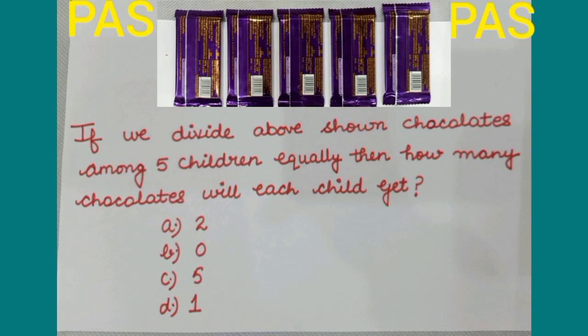Now, the question for pass, if we divide above shown chocolates among 5 children equally, then how many chocolates will each child get? Students, you can see there are 5 chocolates and when we divide these chocolates among 5 children equally, each child will get 1 chocolate. So, the right answer for our question is option D that is 1.